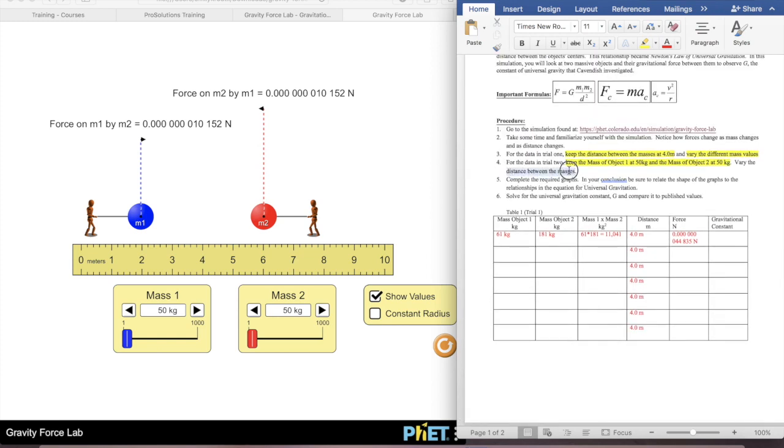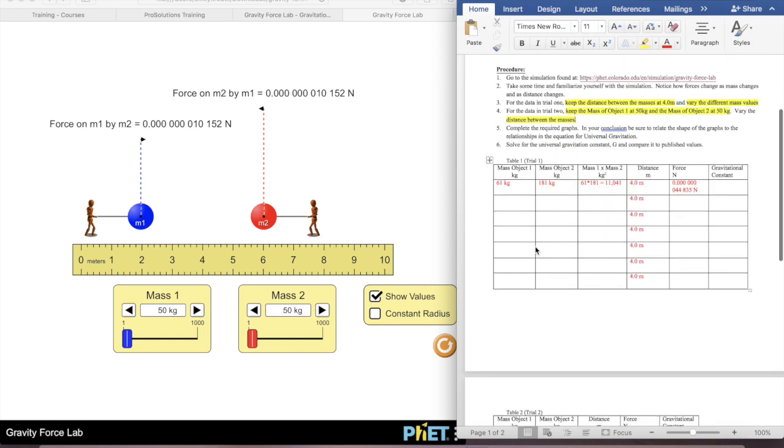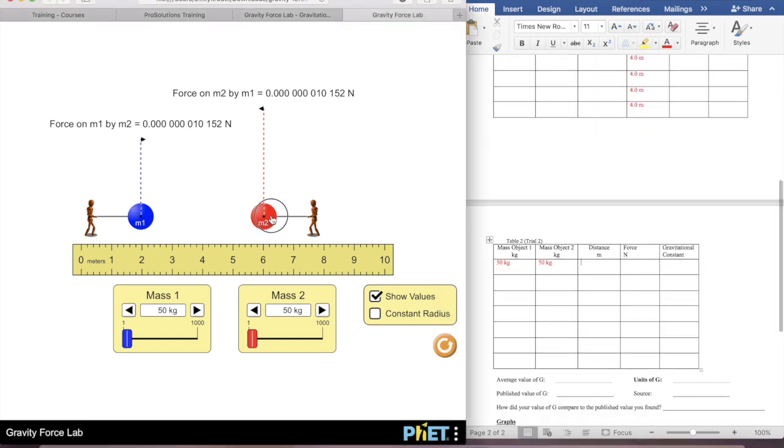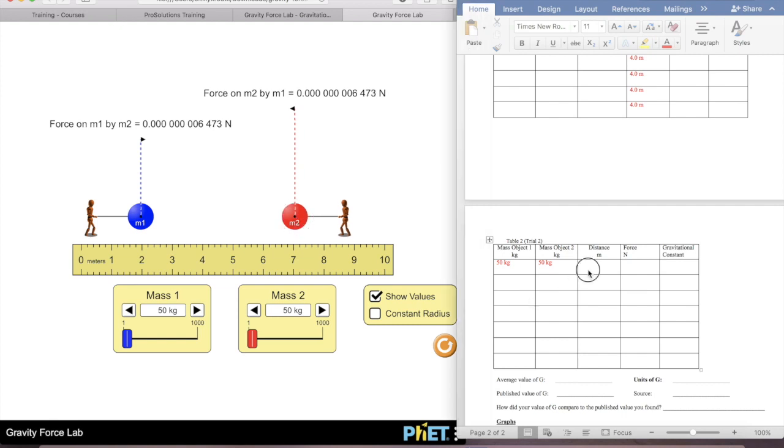It says vary the distance. So you can move this guy over here, and now I've got a five meter distance instead of four. It's going to show me my force up here.